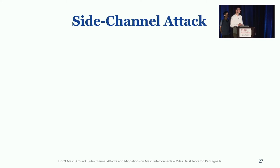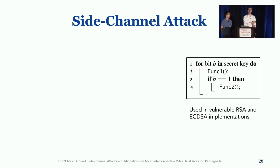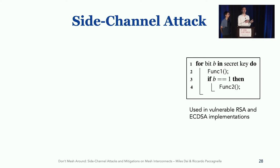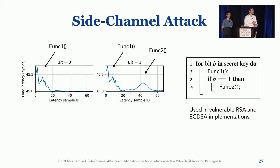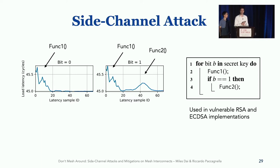The second example of a security implication for attackers is a side channel attack on cryptographic code. We target a cryptographic victim that features a specific code pattern — one that has been exploited many times by prior work, but we are showing here that it can leak over this more complex structure, which is the mesh interconnect. An attacker can set itself up to detect the execution of two functions: function 1 and function 2.